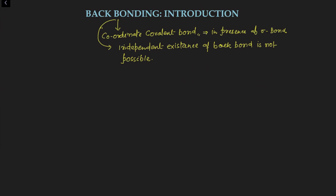So what is back bonding? A back bond is a special type of coordinate covalent bond, and it always forms in the presence of a sigma bond — meaning independent existence of back bonding is not possible. Any single coordinate bond in the absence of a sigma bond will not be back bonding. To understand coordinate covalent bonds, let's discuss the classification of coordinate bonds.